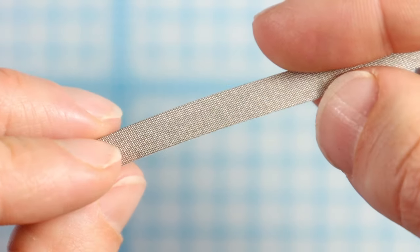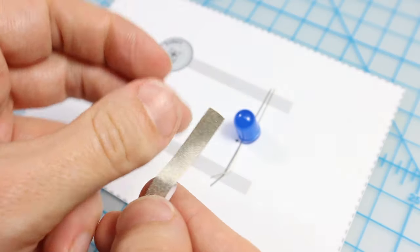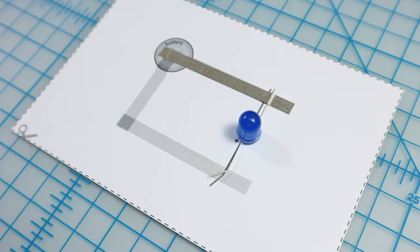Maker tape has a white paper backing. Cut a piece to size, then peel off the backing and stick it to the paper. Place Maker tape along the top line and over the LED's negative leg, stopping at the spot where the battery goes.